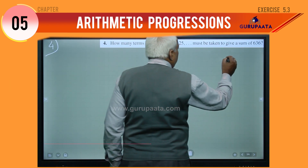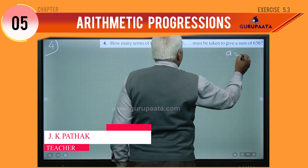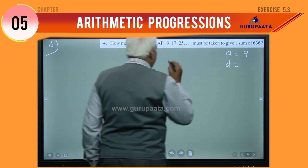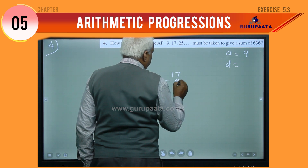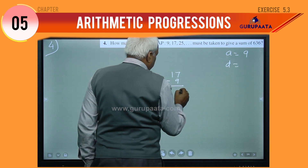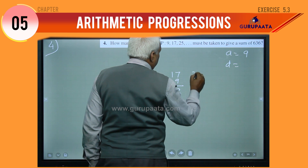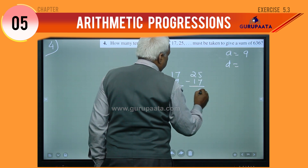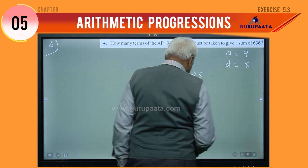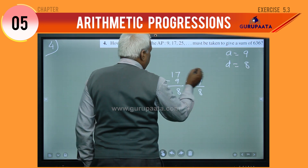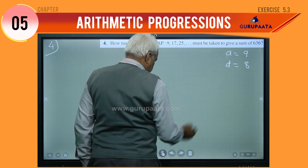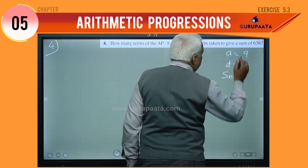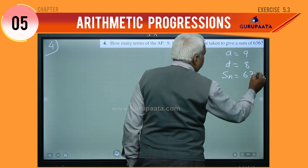Here, A is equal to 9. D we will calculate: 17 minus 9 is 8, or 25 minus 17 is also 8. So D is 8. It is given that Sn is equal to 636.